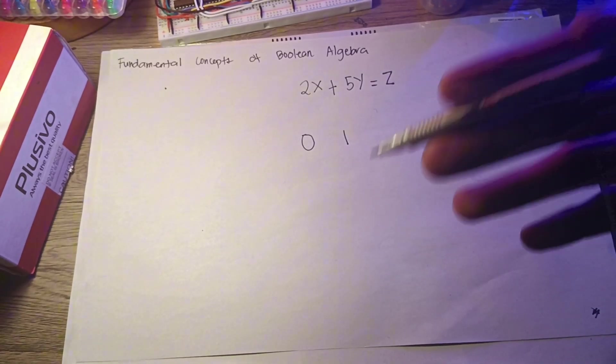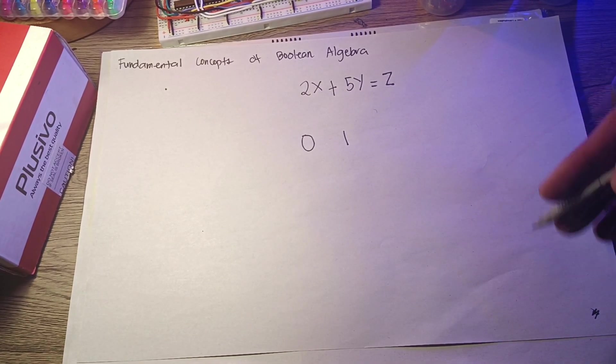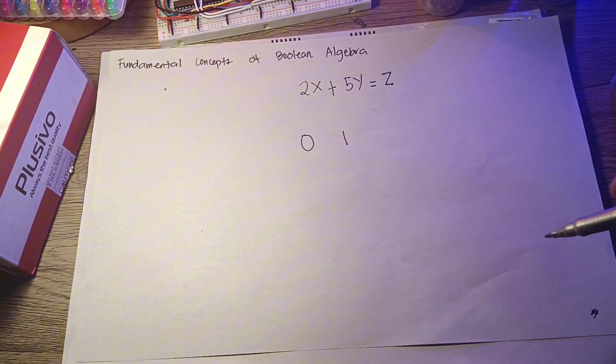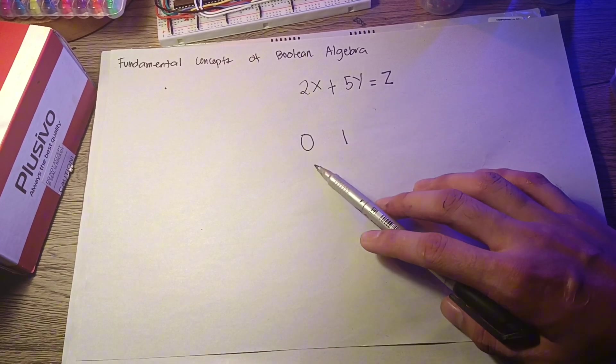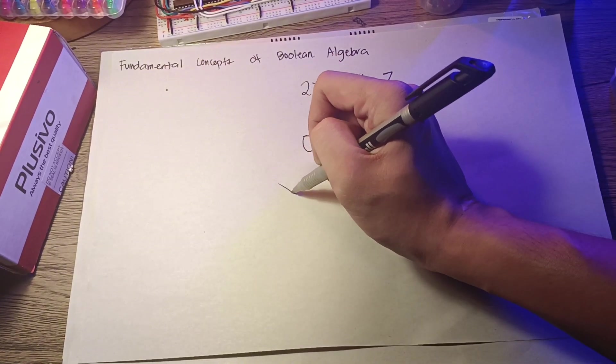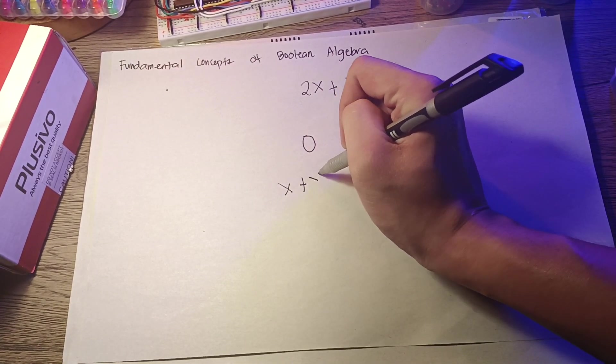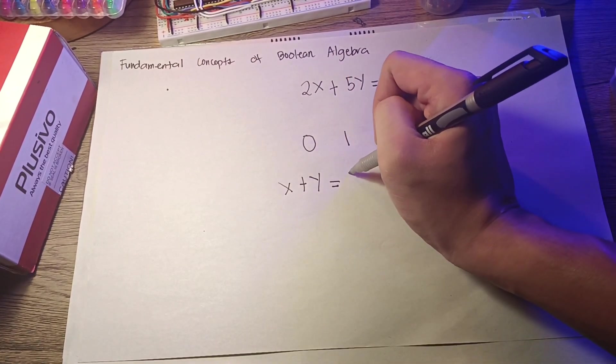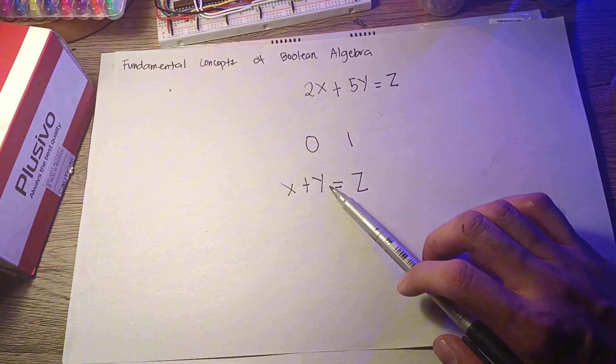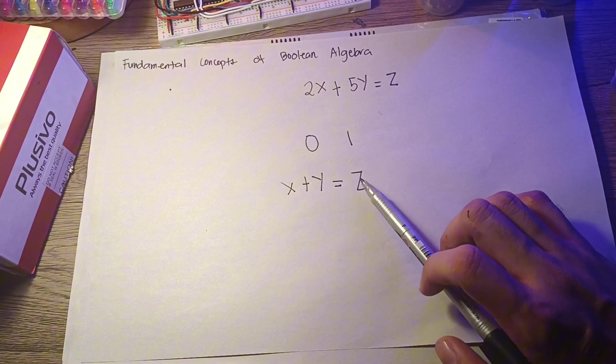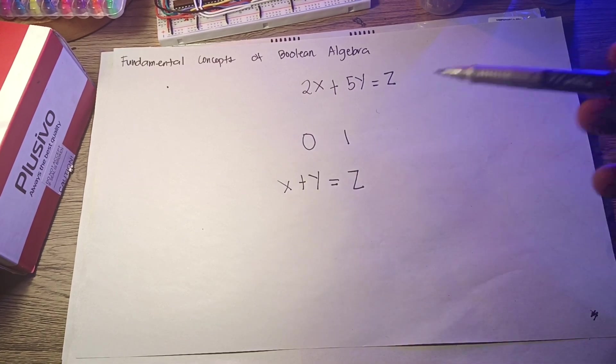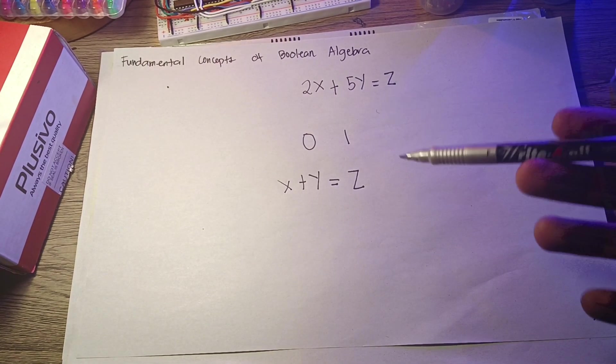If an equation describing logical circuitry has several variables, it is still understood that each of the variables can assume only the value of 0 and 1. For instance, in the equation x plus y equals z, each of the variables x, y, and z may have only the values 0 or 1.